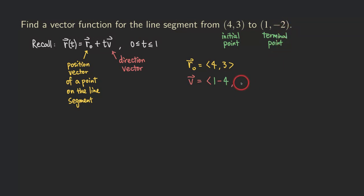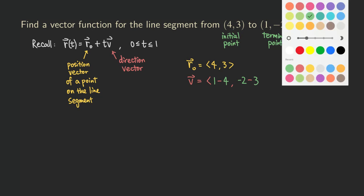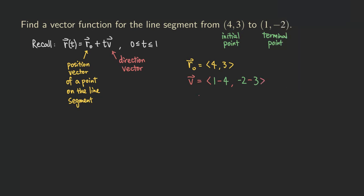For the second component, the y-component, we take -2 from the terminal point and subtract the y-value of the initial point, which is 3: so -2 minus 3. That gives us a direction vector of (-3, -5). So now we have a point on the line and the direction vector, and we're ready to write down the vector function for the line segment.